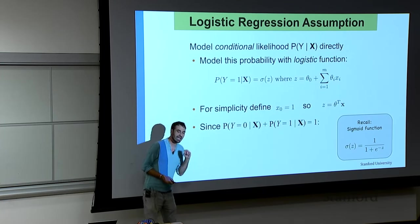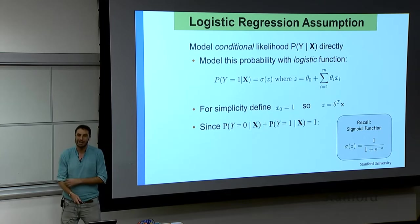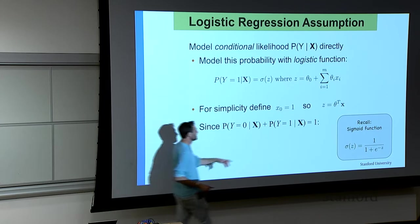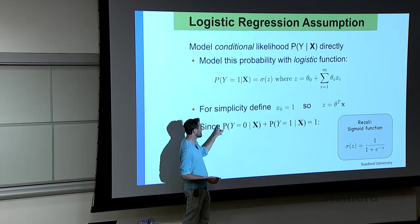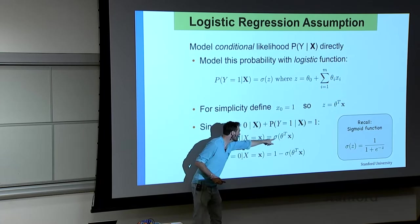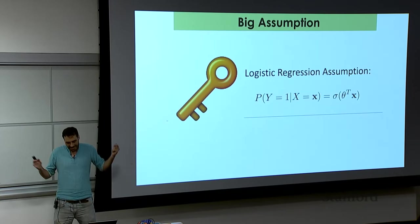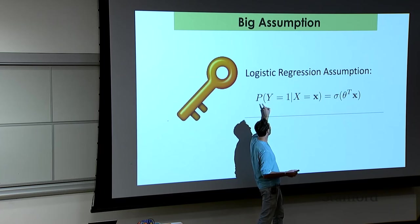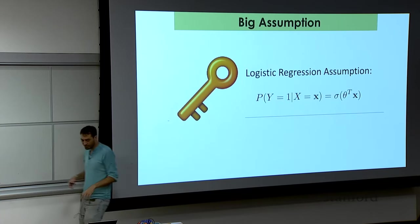One thing I haven't told you: this model predicts the probability that y equals one. Where is the model that predicts the probability that y equals zero? You won't be surprised to hear: you don't need another model. If you've got a model that predicts y equals one, the probability that y equals zero given x plus the probability that y equals one given x should equal one. So the probability that y equals zero is just one minus the probability that y equals one. That's it — this is the logistic regression model: the sigmoid of the weighted sum of all of our inputs.